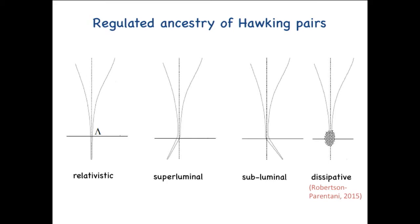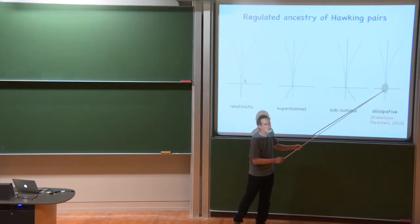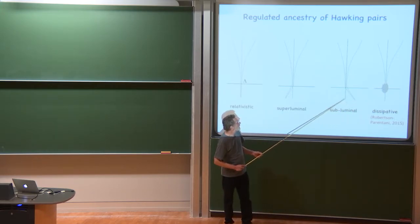Now, in general, what would happen to the Hawking pairs in these different scenarios? First, the relativistic case, the pairs trace backwards in time. They just squeeze closer and closer to the horizon, become arbitrarily blue-shifted. In the subsonic or subluminal case I just described, the pair actually comes from outside. In the case where it decays, it's unstable, it sort of dissolves into the soup outside or around the horizon.